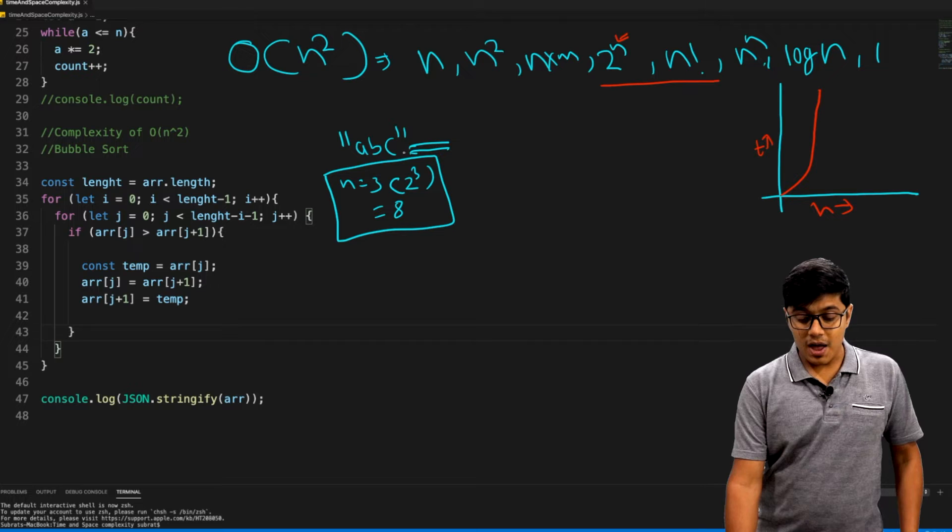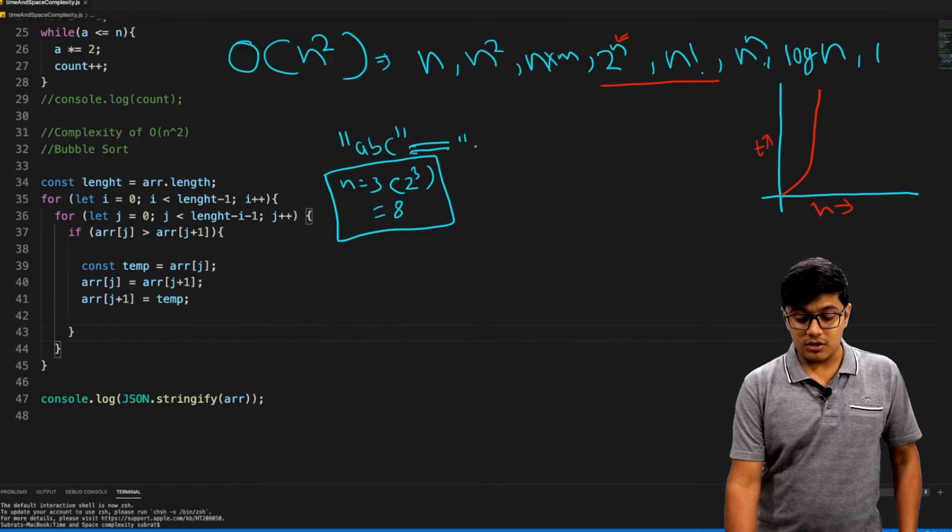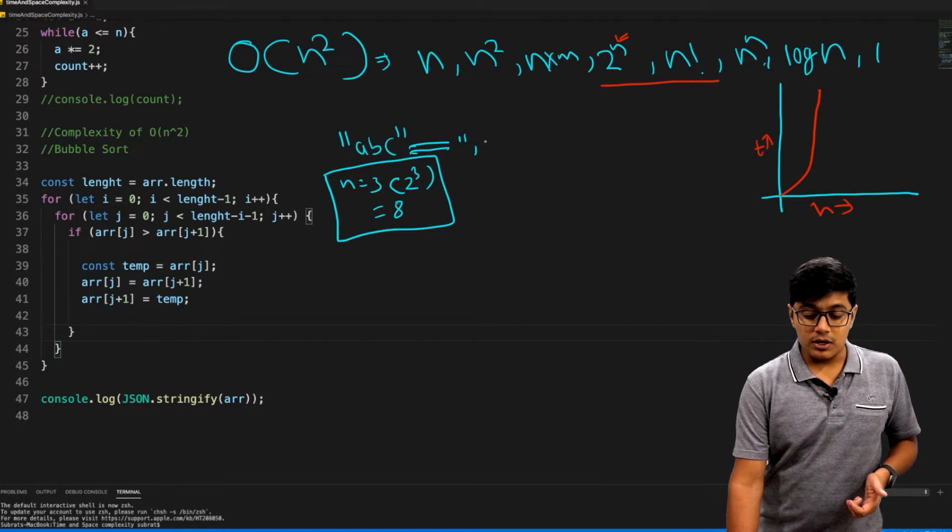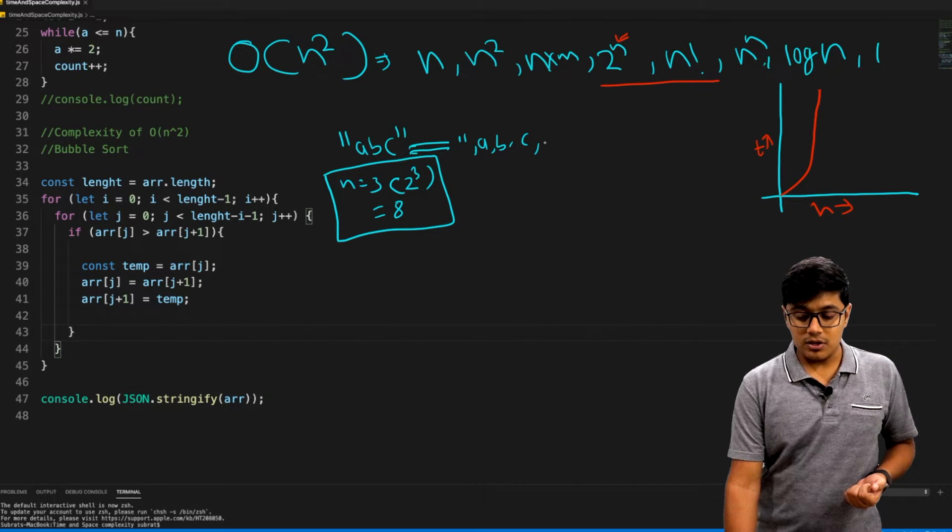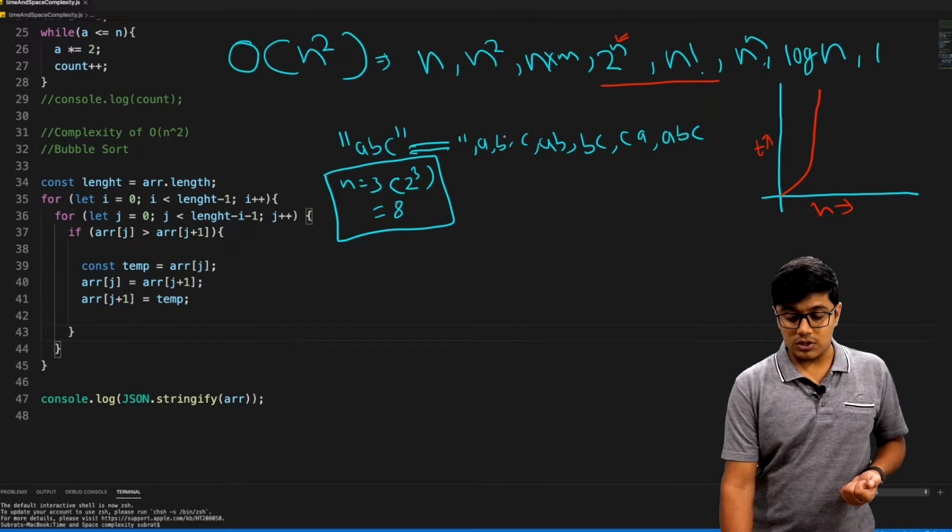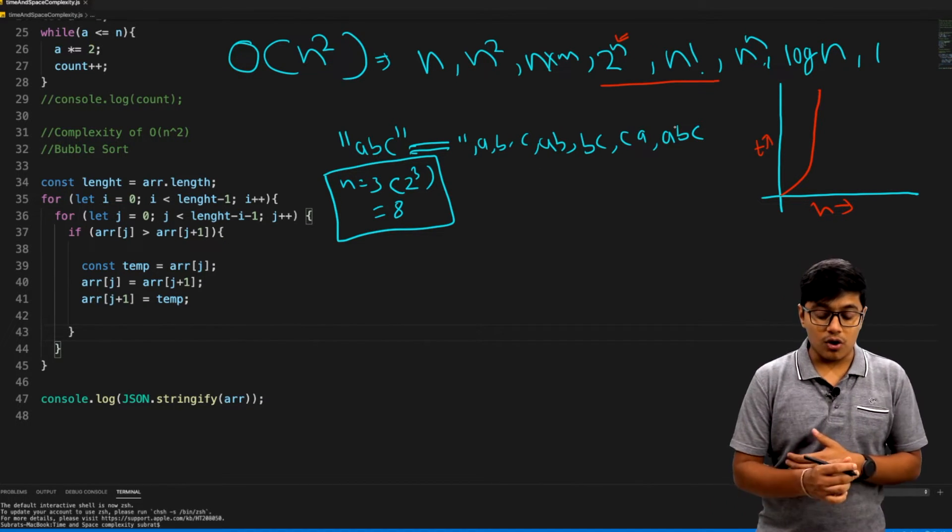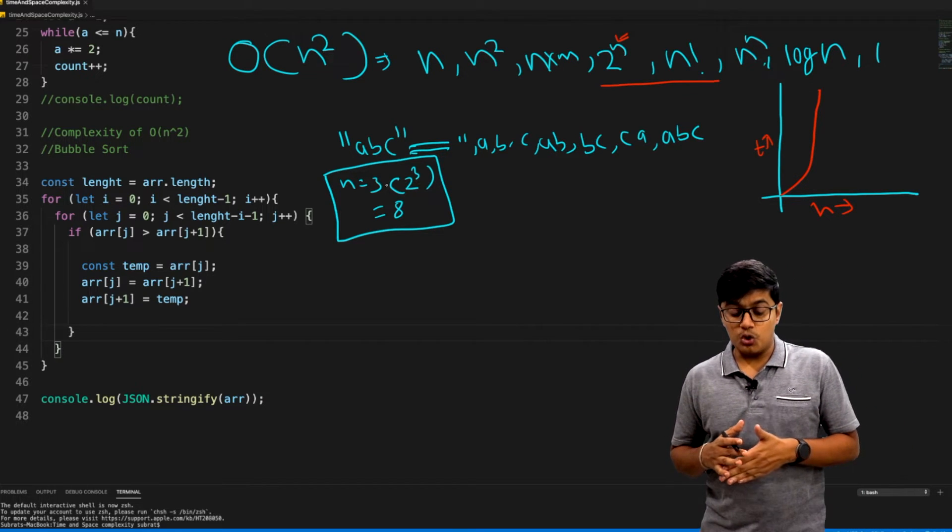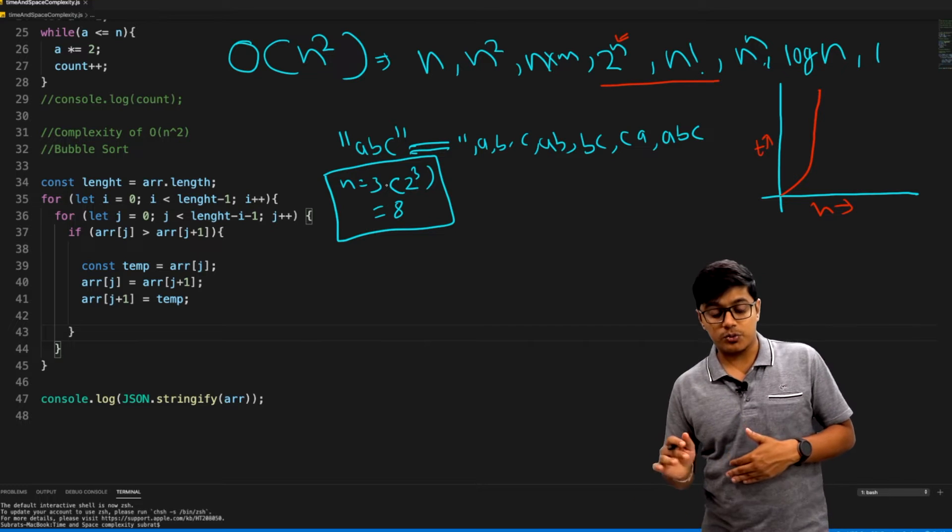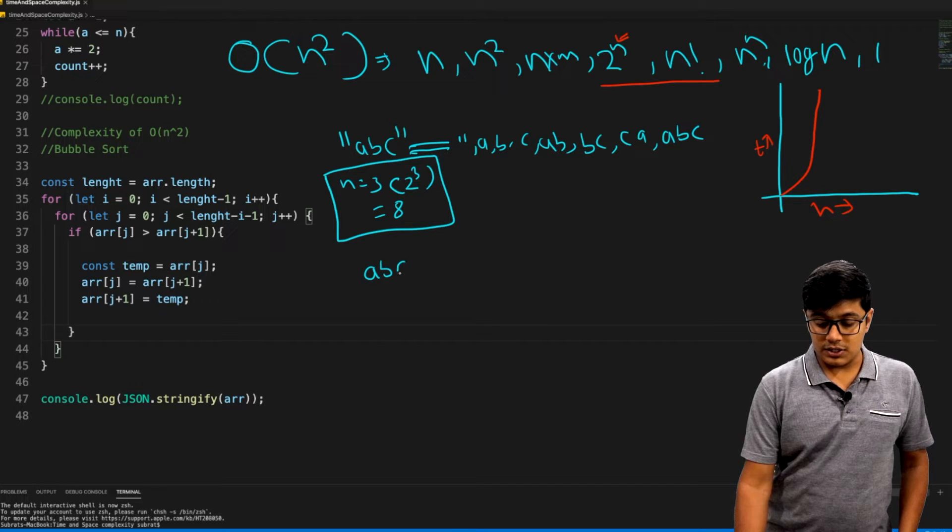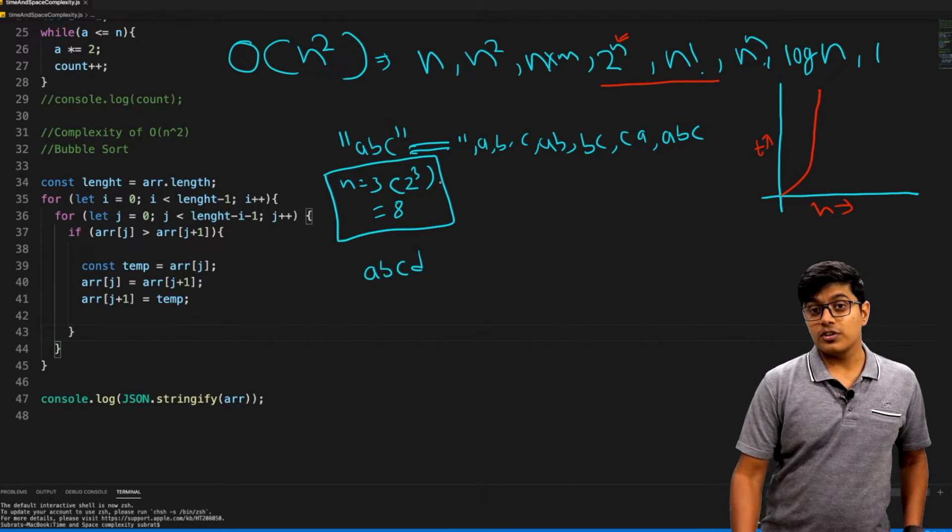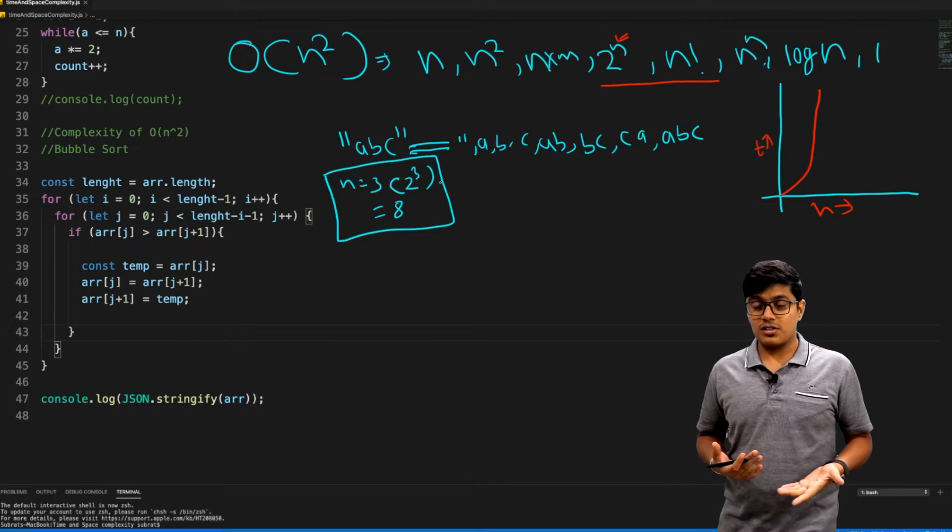If you check here, in ABC, first of all you have empty string, that's default for all. Now you have A, B, C, obviously. Then you have a combination of A and B, so AB, then BC, then CA, then ABC. If you count, 1, 2, 3, 4, 5, 6, 7, 8, we got all the values. This is what 2 to the power n will be, so it will increase exponentially.